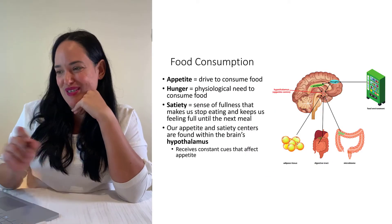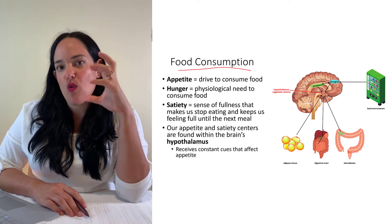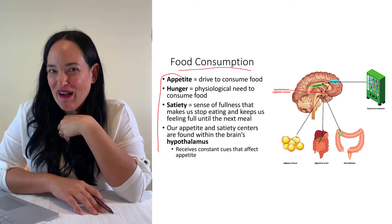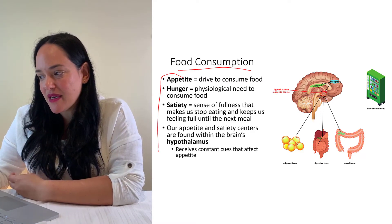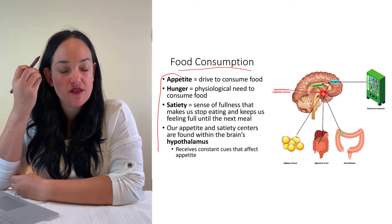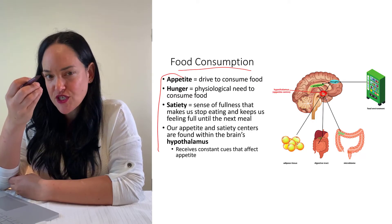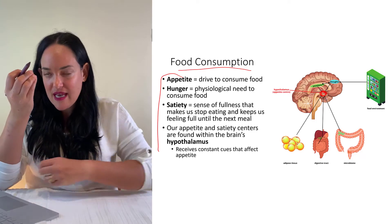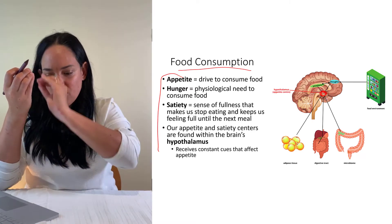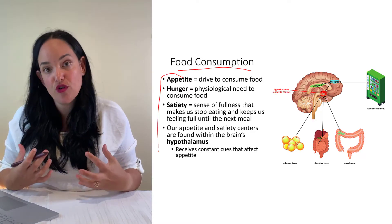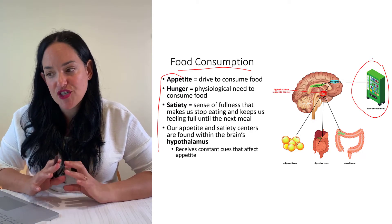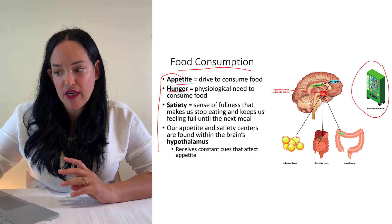One factor that increases our risk for obesity is eating too much, and something that affects how much we eat is appetite regulation — probably the thing I like talking about the most. The hypothalamus, in the center of our brain, is our drive center — it governs sex drive, thirst, and temperature regulation — and it ultimately drives the urge to eat. It receives messages from all over the body, from internal systems and the external environment, and these messages affect appetite, hunger, and satiety.